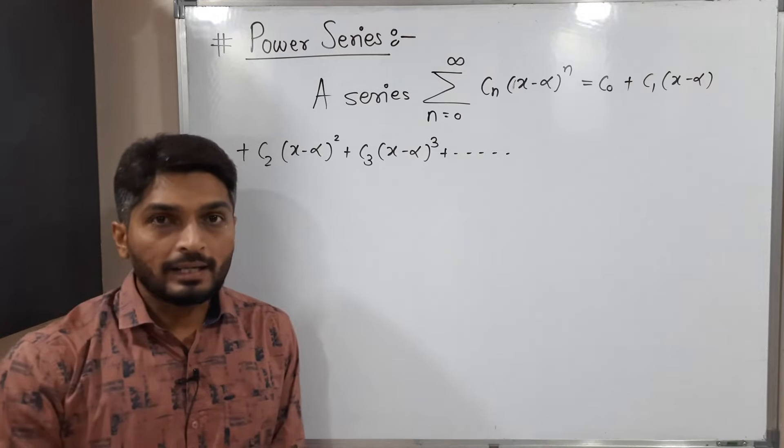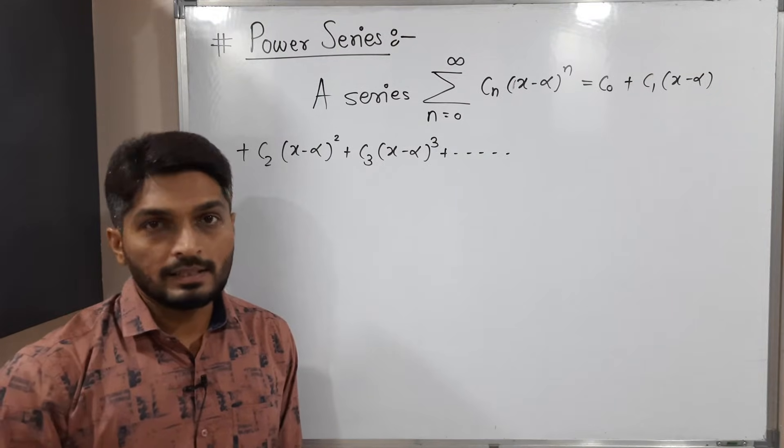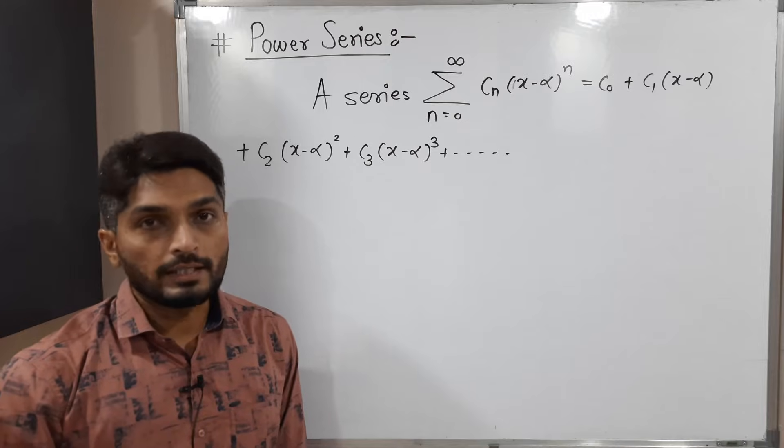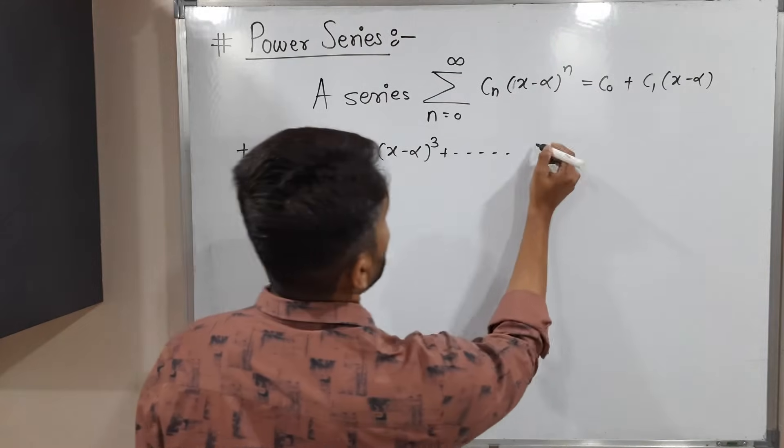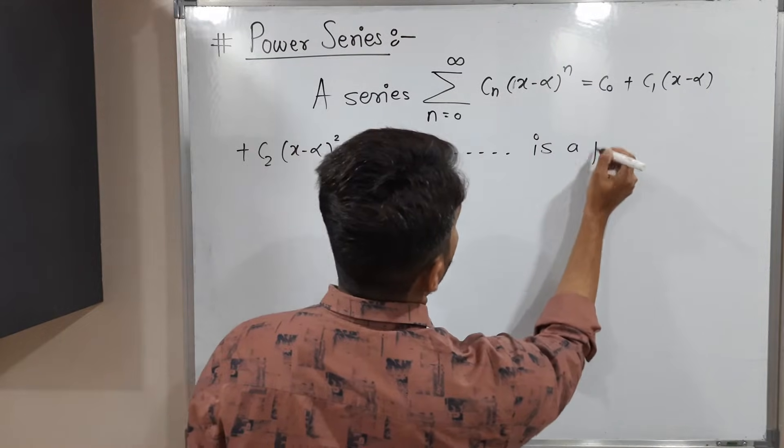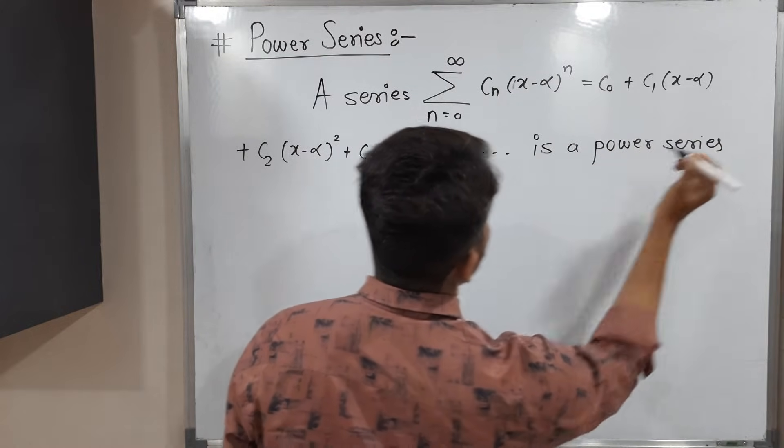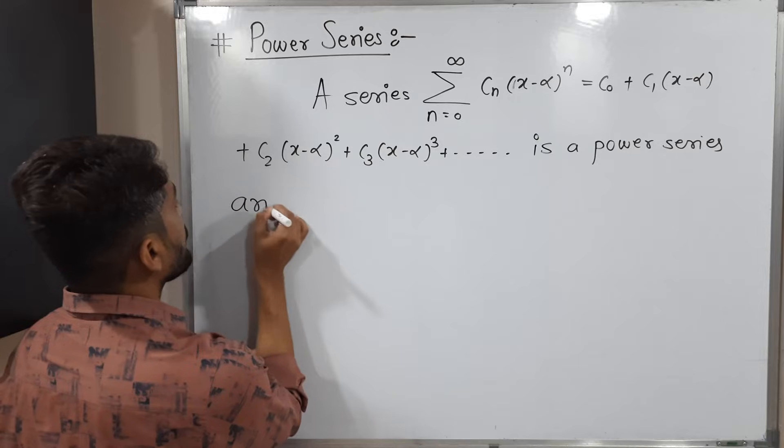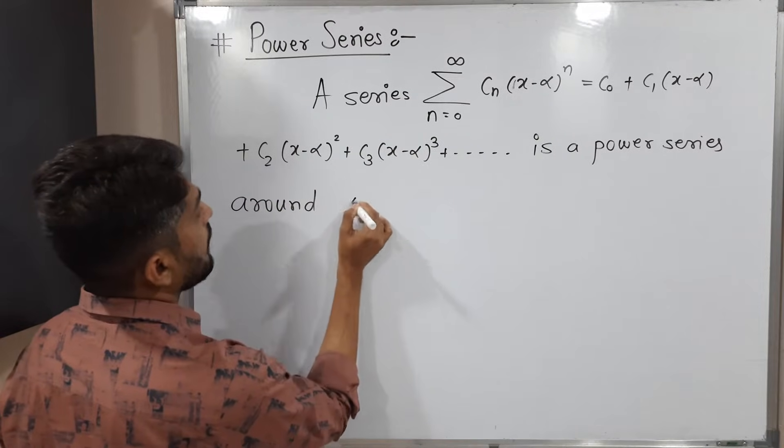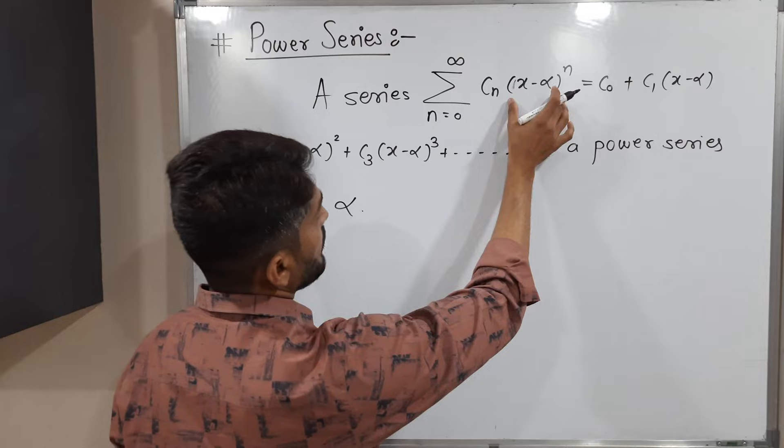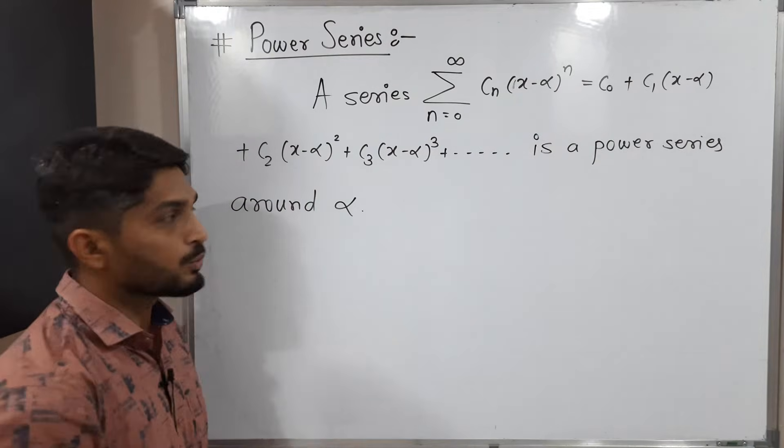As you can see here, that bracket has some power and it is increasing. So that's why we call it a power series. It is a power series around alpha, since we have x minus alpha raised to n.